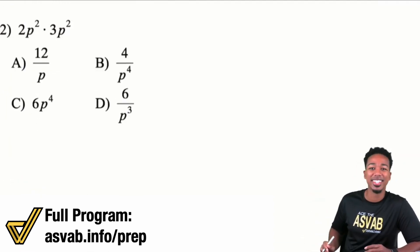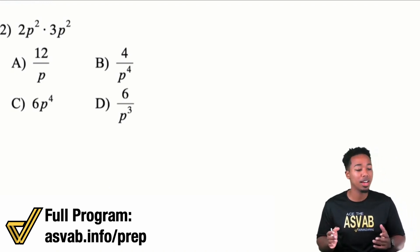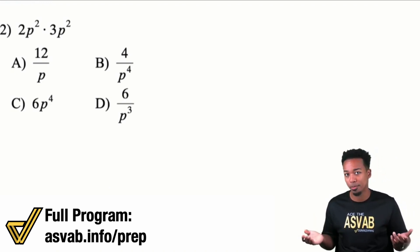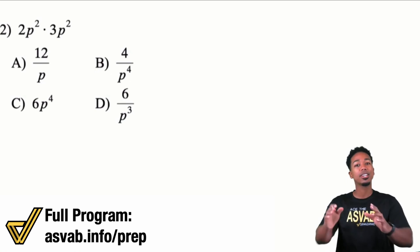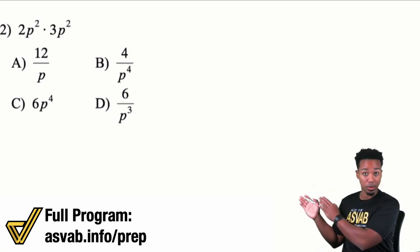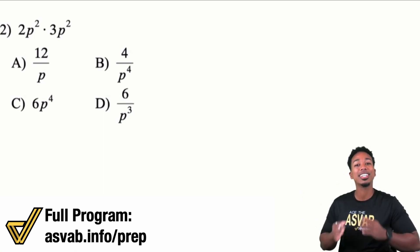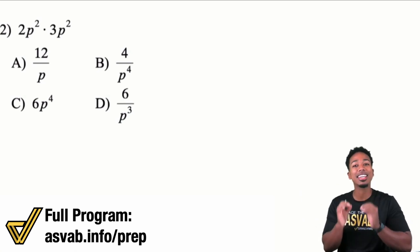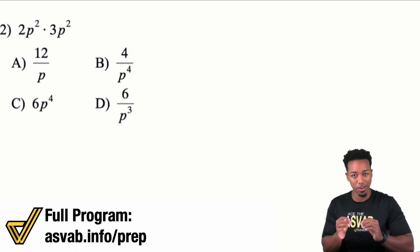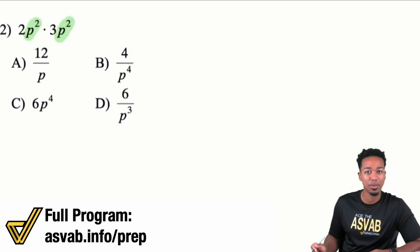So number two: we have two P squared multiplied by three P squared. This is multiplying powers. When you're multiplying powers, all you need to do is add the exponents of the same variables. One more time — we're going to be adding the exponents of the same variables.